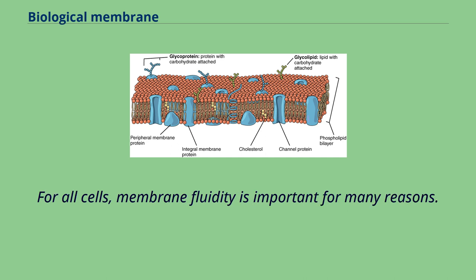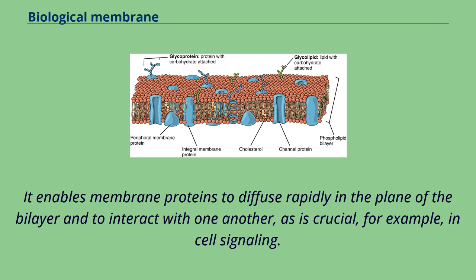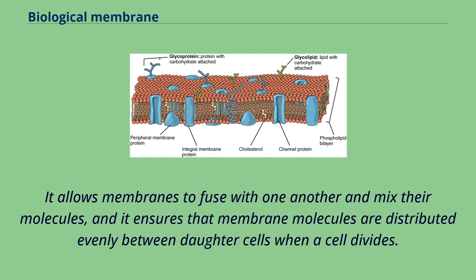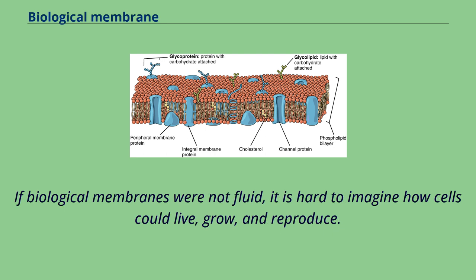For all cells, membrane fluidity is important for many reasons. It enables membrane proteins to diffuse rapidly in the plane of the bilayer and interact with one another, which is crucial for cell signaling. It permits membrane lipids and proteins to diffuse from sites where they are inserted into the bilayer to other regions of the cell. It allows membranes to fuse with one another and mix their molecules, and it ensures that membrane molecules are distributed evenly between daughter cells when a cell divides. If biological membranes were not fluid, it is hard to imagine how cells could live, grow, and reproduce.